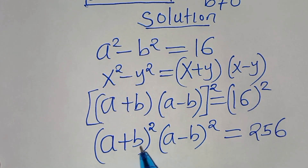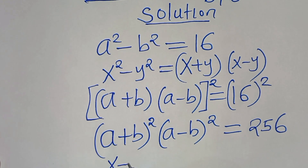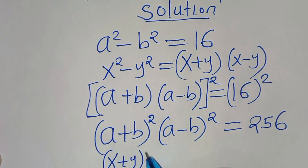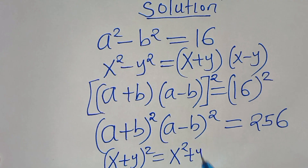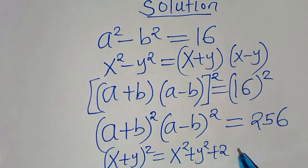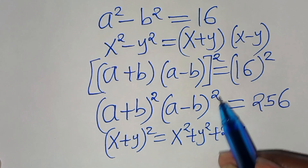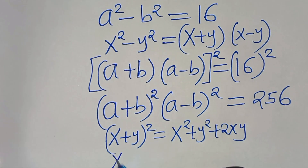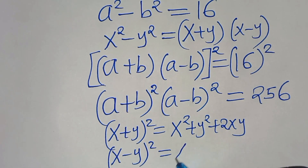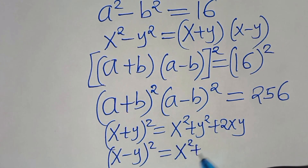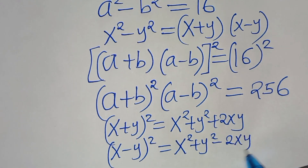Now, a plus b raised to the power of 2 is in the form of x plus y raised to the power of 2, which we can express as x squared plus y squared plus 2xy. As well as a minus b raised to the power of 2, in the form of x minus y raised to the power of 2, which we can express as x squared plus y squared minus 2xy.